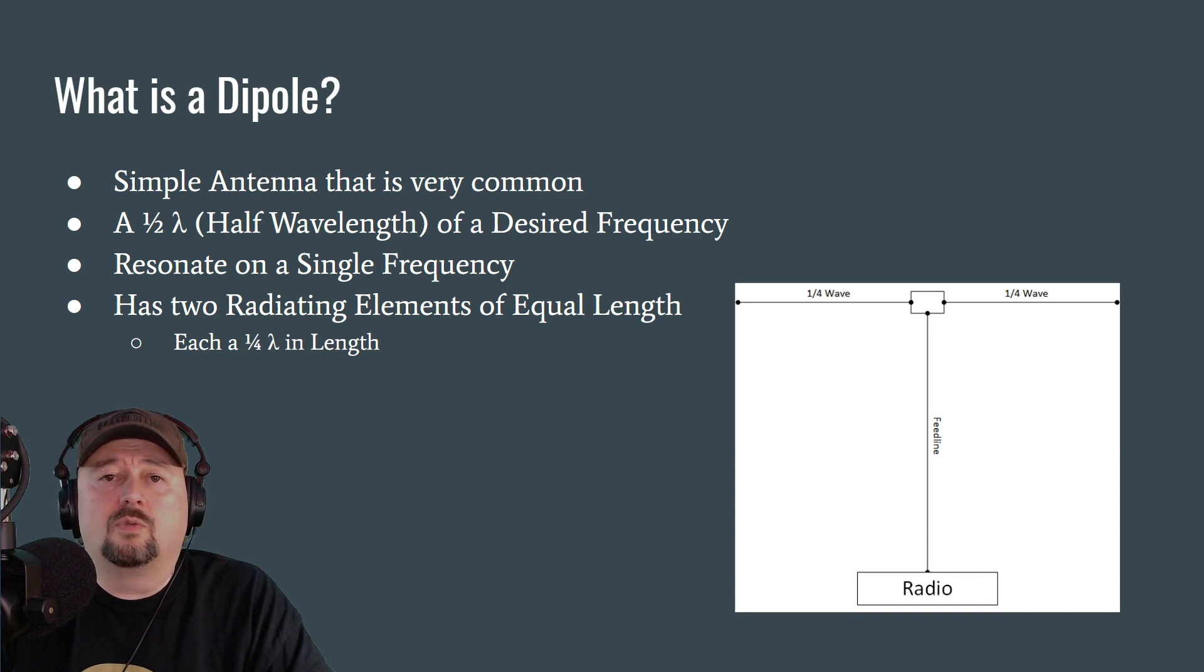And a dipole antenna has two radiating elements of equal length. Each one of those is a quarter length of the wavelength. Now there's a diagram here that you can take a look at, and it depicts a very simple dipole with your quarter wave elements feeding into what is called an antenna feed point. Some people will put a balun or a choke there, and we're going to cover that in subsequent slides. And then you see some feed line depicted. There are a couple of different ways that you can use to feed your antenna with feed line. For this conversation, we're going to talk about coax. Coaxial cable is widely used. It's extremely common.